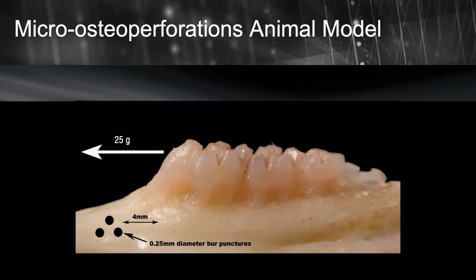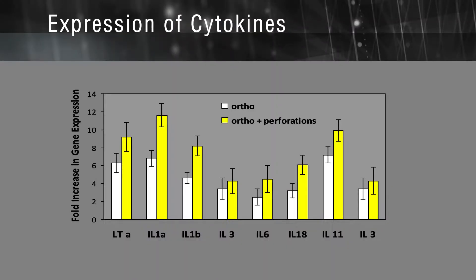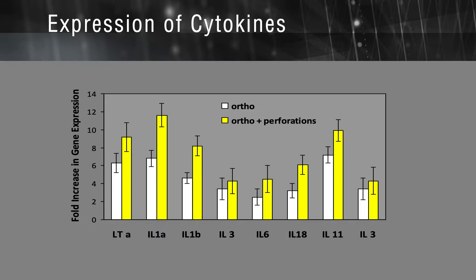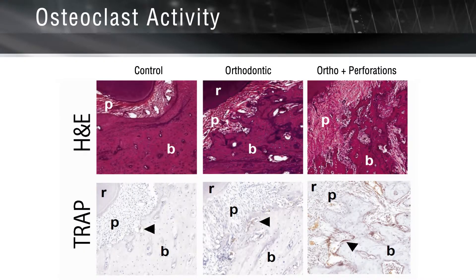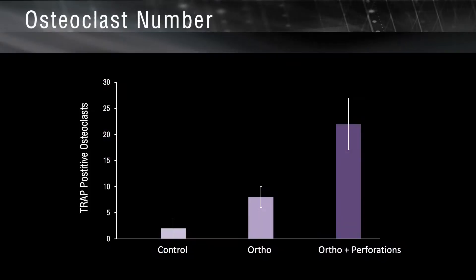We compared the rate of tooth movement with animals that only received orthodontic forces without perforation. In animals that received perforation in the direction of orthodontic tooth movement, the magnitude of inflammatory markers was higher. This was accompanied by an increase in the number of osteoclasts in the area.